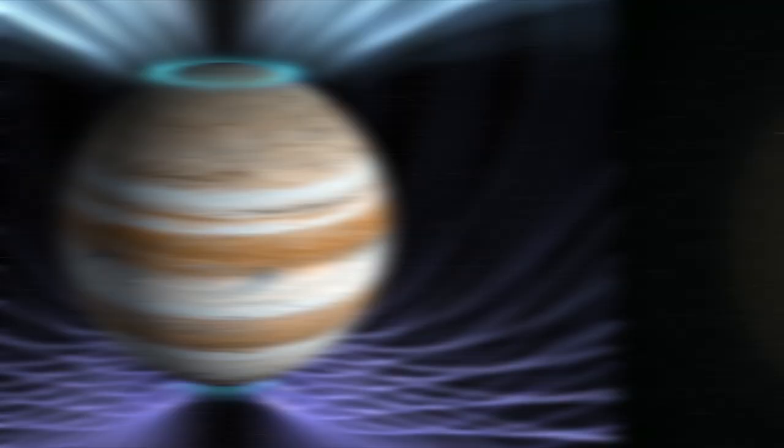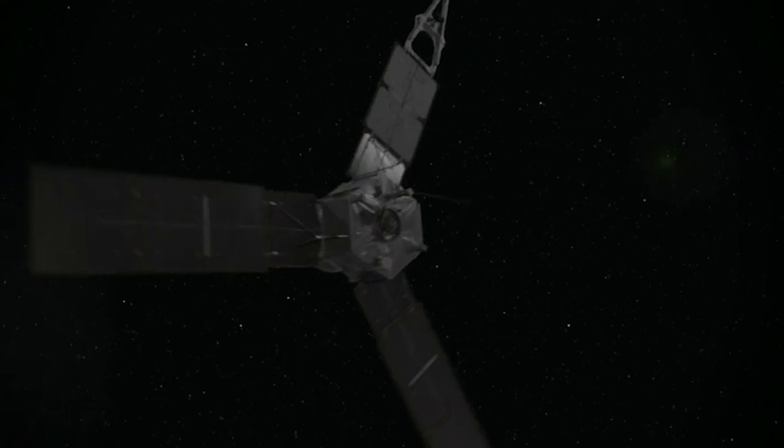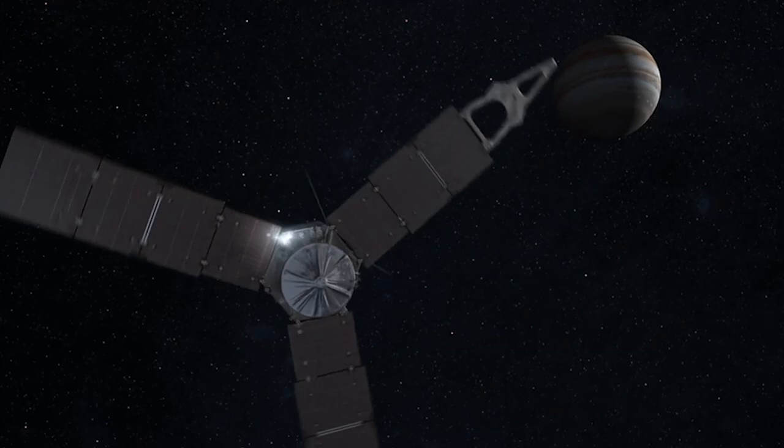Juno is the fastest spacecraft ever to venture into the outer solar system. It's the first to orbit pole to pole about Jupiter and it's the most heavily shielded spacecraft that we've ever launched.